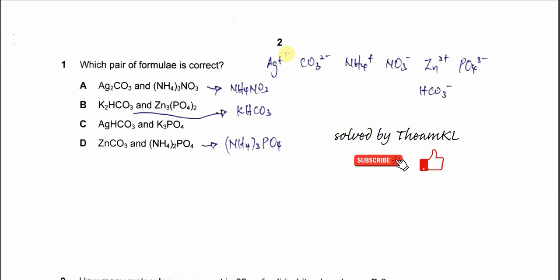The silver ion is positive, carbonate is two negative, ammonium is positive, nitrate is negative, zinc ion is two positive, phosphate is three negative, hydrogen carbonate is negative. When you know these charges, then you know what is the correct formula of the compound.